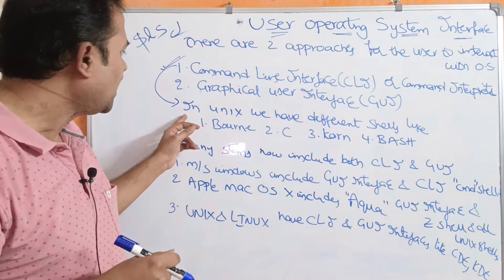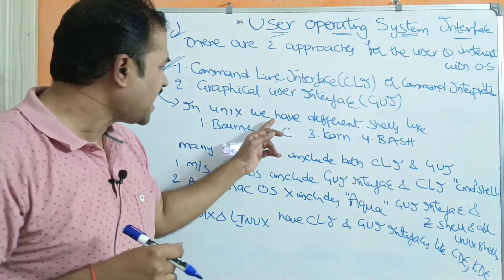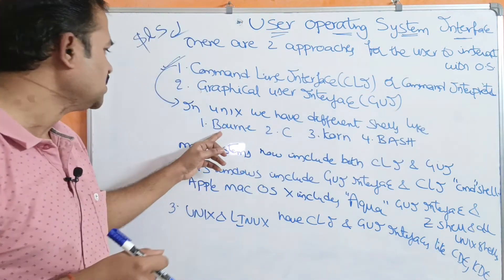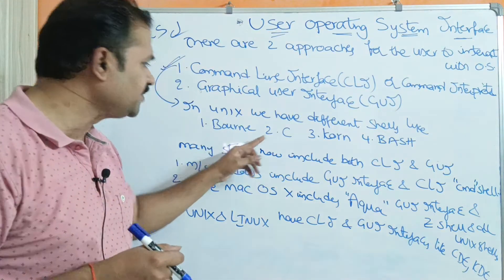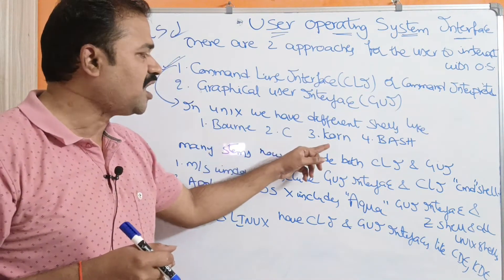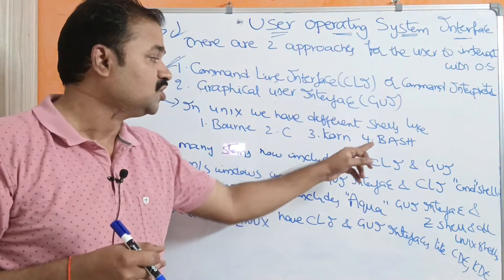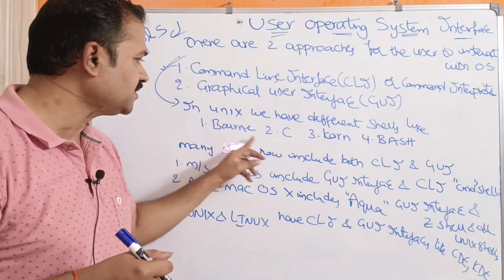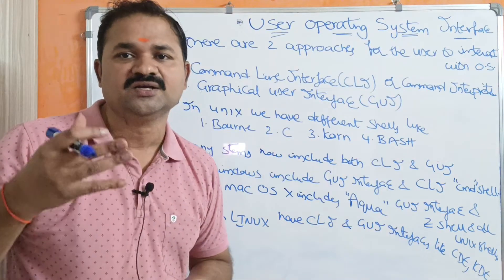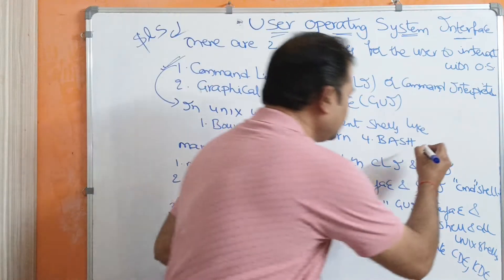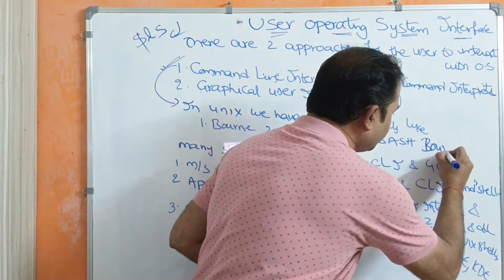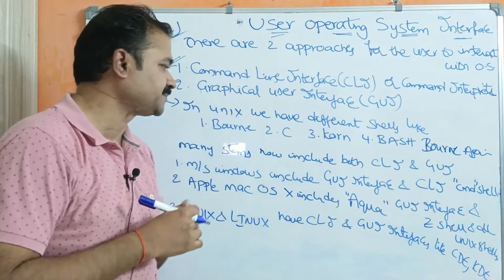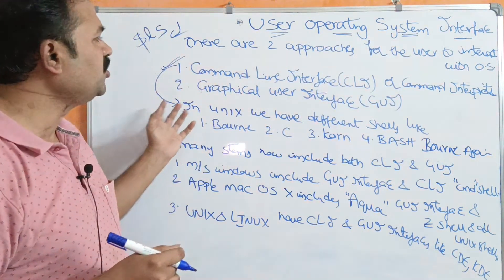In Unix or Linux, we have different types of shells. Mainly we have four shells: the first is the Born Shell, the second is the C Shell, the third is the Corn Shell, and the fourth is the Bash Shell. Bash stands for Born Again Shell — 'B' for Born and 'A' for Again, so Born Again Shell, abbreviated as bash.